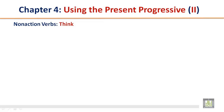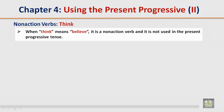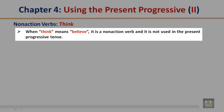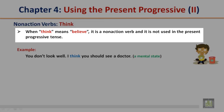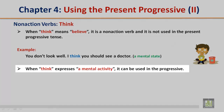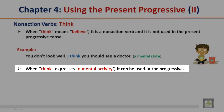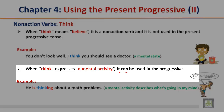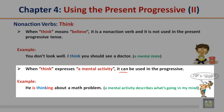Non-action verbs — think. When 'think' means 'believe,' it is a non-action verb and is not used in the present progressive tense. Example: I think you should see a doctor. However, when 'think' expresses a mental activity, it can be used in the progressive. Example: He is thinking about a math problem. A mental activity describes what's going on in one's mind.